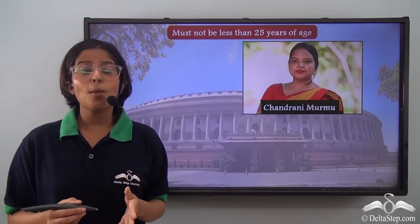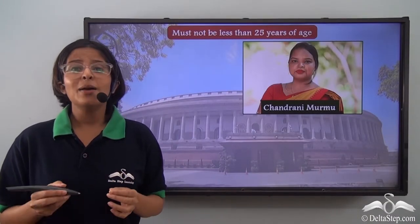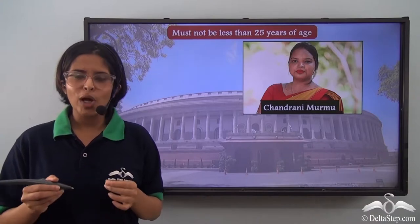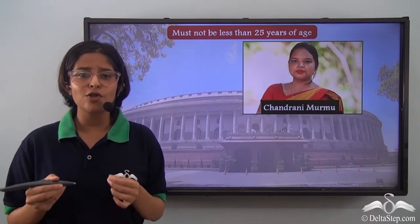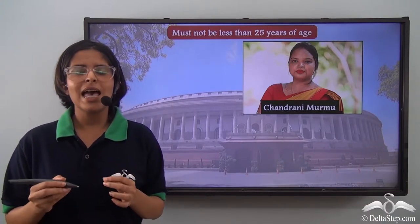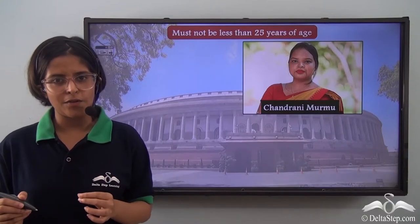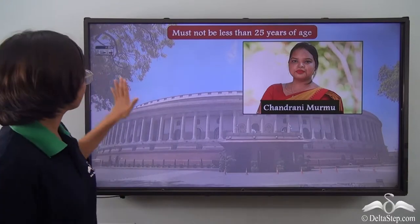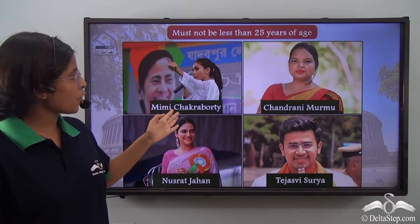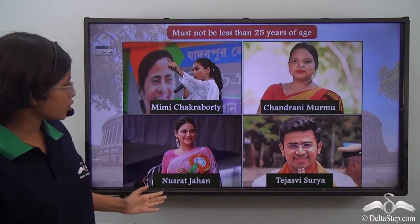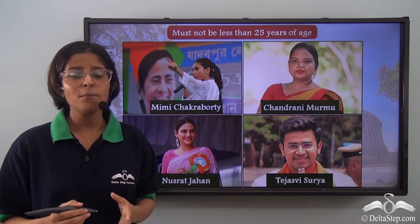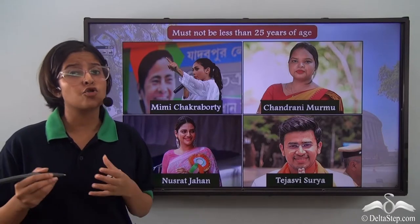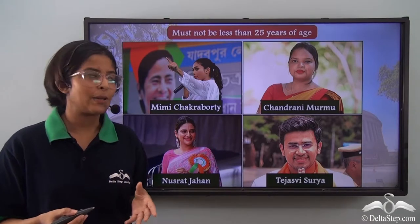Chandrani Murmu from Odisha became the youngest member of Lok Sabha when she won a seat in the general elections at the age of 25. We also have other young members like Mimi Chakraborty, Nusrat Jahan and Tejasvi Surya who have proven that politics is not just for the older generation.